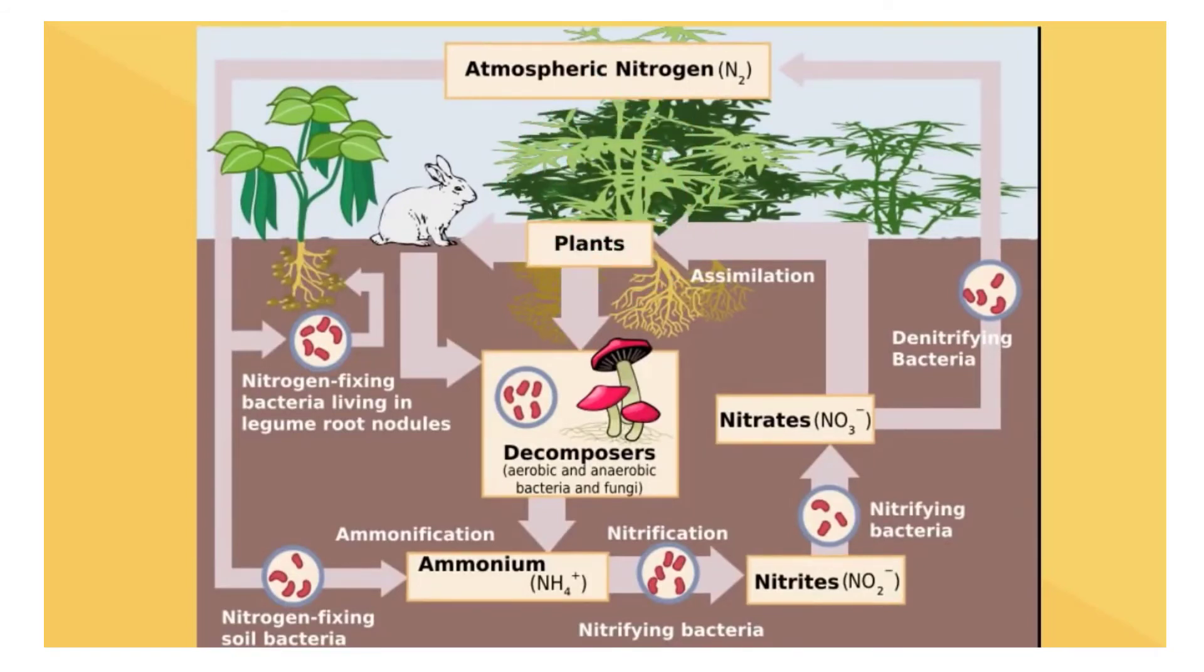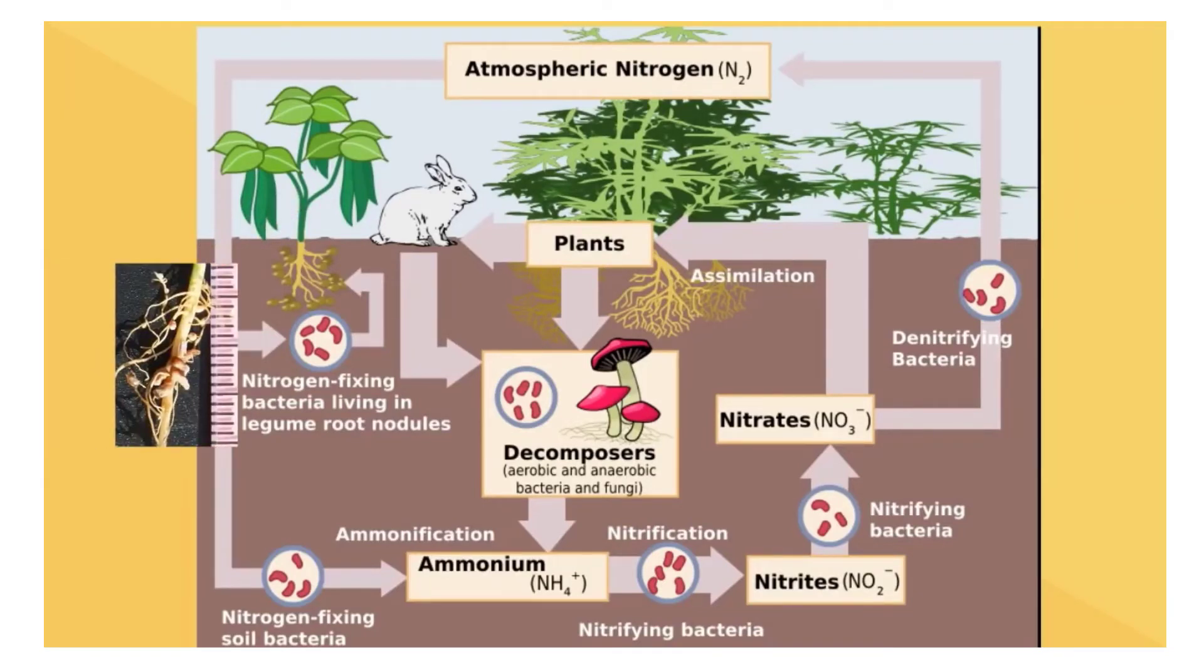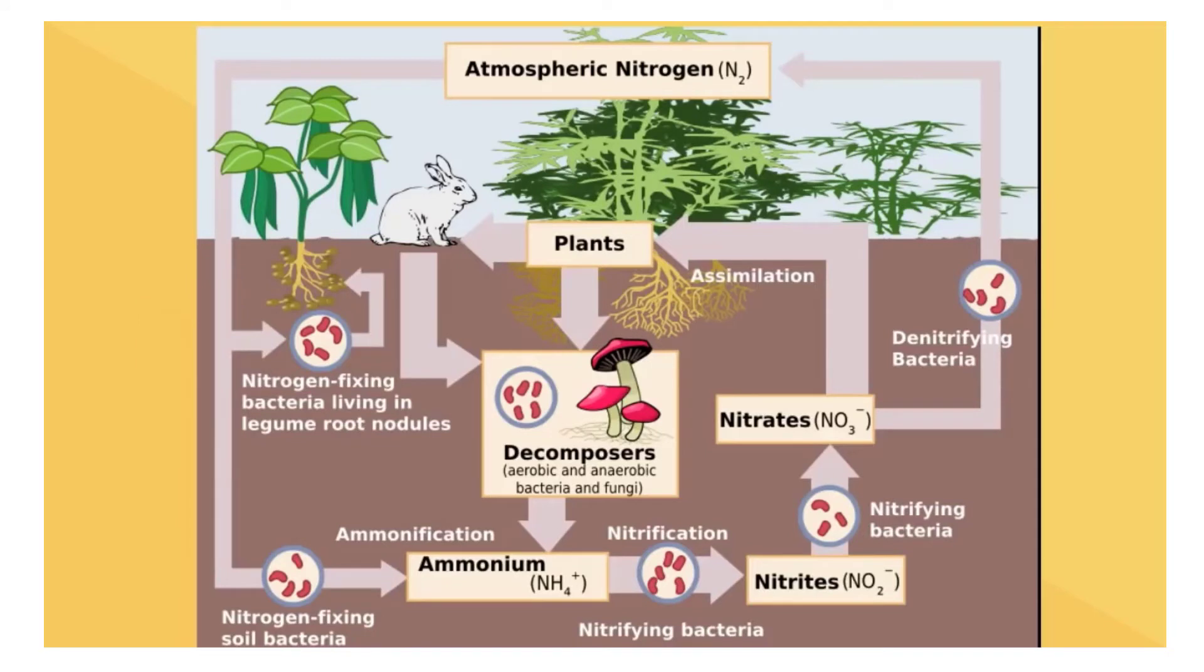Nitrogen in the atmosphere falls to the earth by precipitation such as rain or snow. Once in the soil it finds its way to bacteria on the roots of plants. At the roots the nitrogen is combined with hydrogen to make ammonia in a process called nitrogen fixation. Lightning in the atmosphere can also do this.